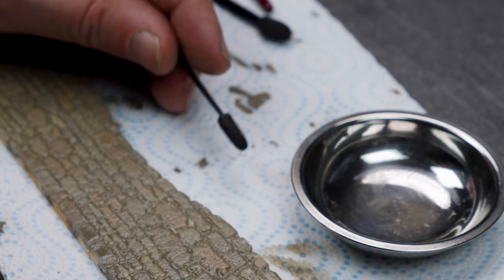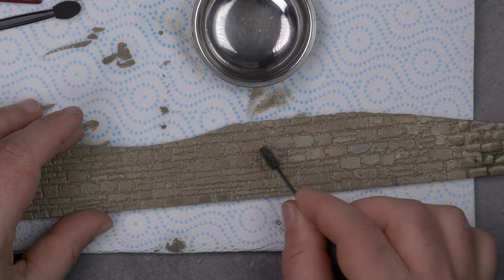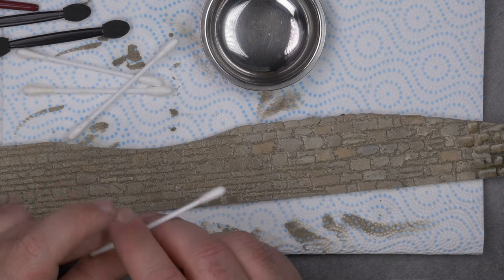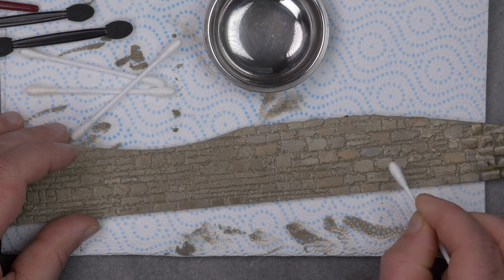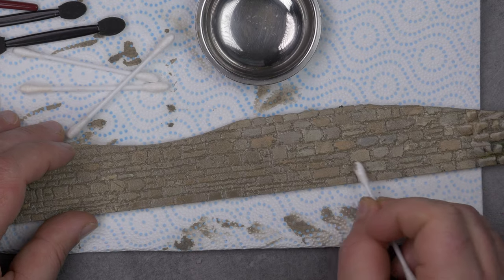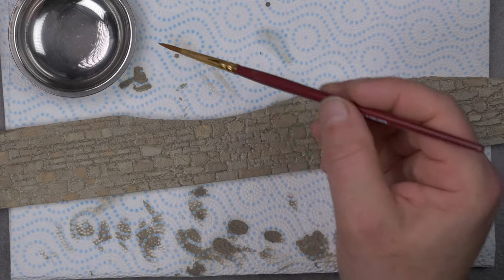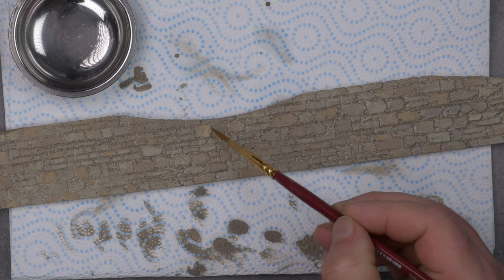Then you need some kind of makeup sponge. I think this one is for eye shadow. These Q-tips work too. We start cleaning. The point of all this is that you leave the wash in the crevices.